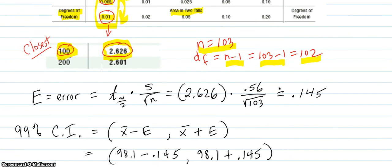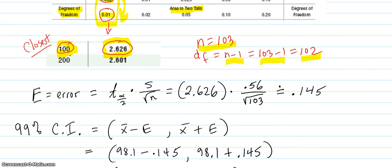Now we go here and we use our formula. First, we get the error. The error is t times the sample standard deviation over the square root of the sample size, so t times s over the square root of n. There's our t-value we just got out of the table, 2.626. 0.56 is the sample standard deviation. Square root of 103 is the sample size. Divide that, carry it out to three decimal places because the problem said to do it to three decimal places. So we're going to carry that accuracy.